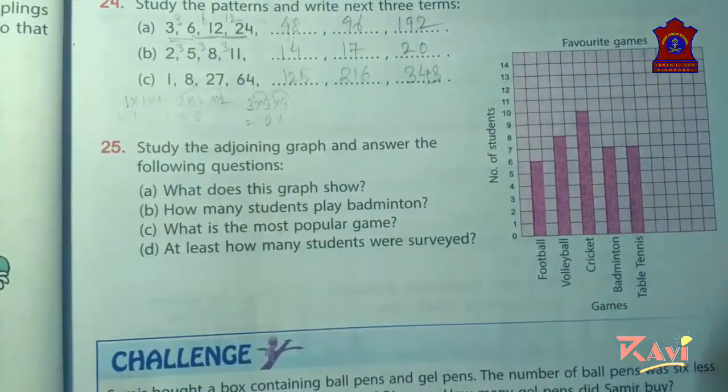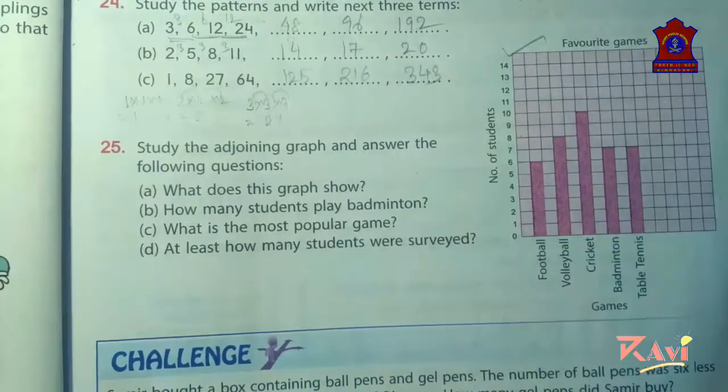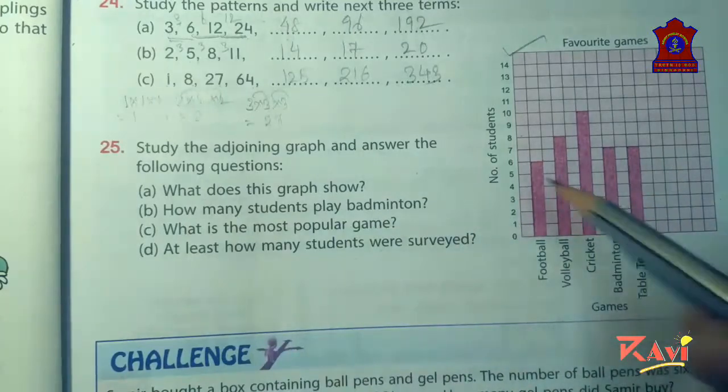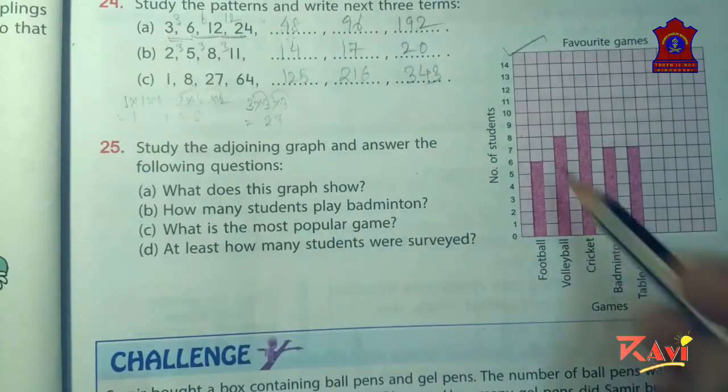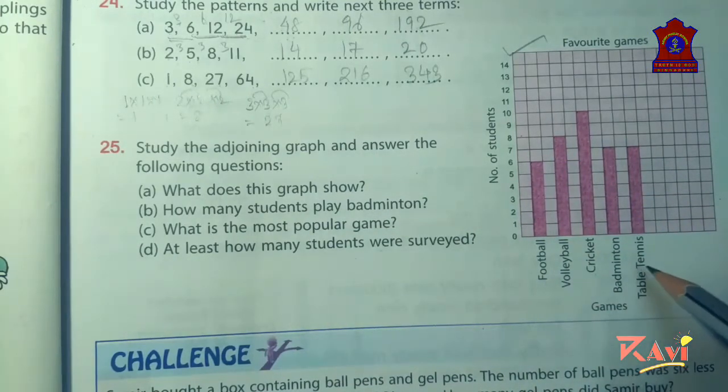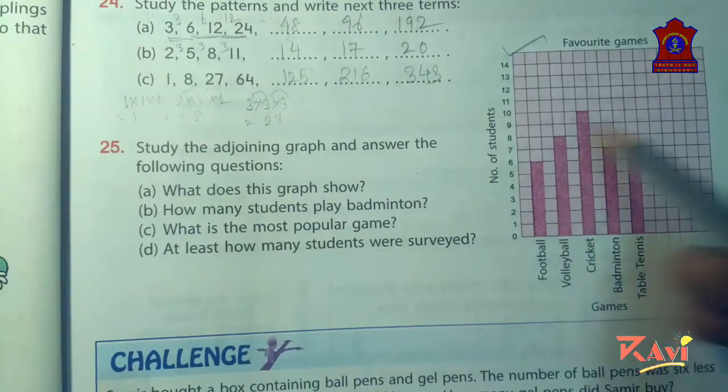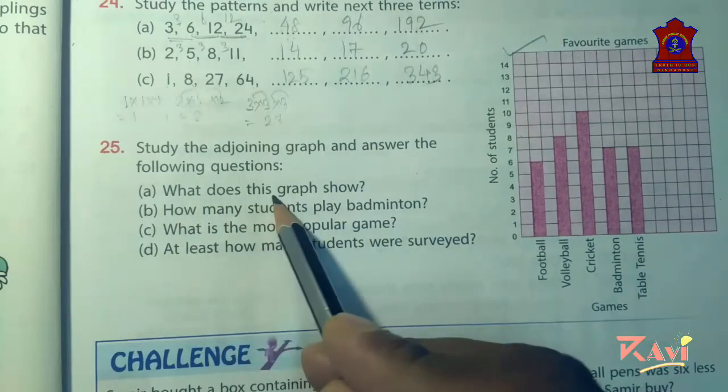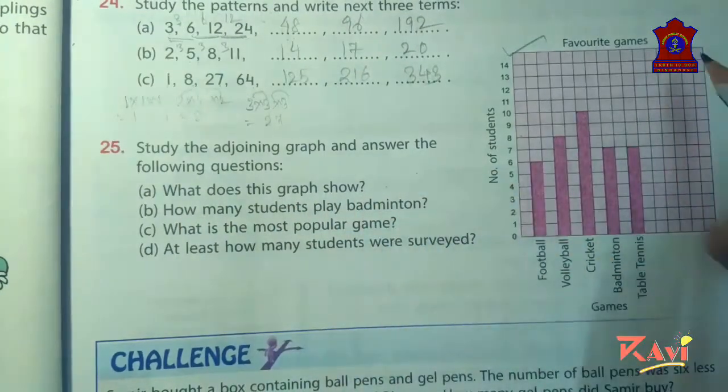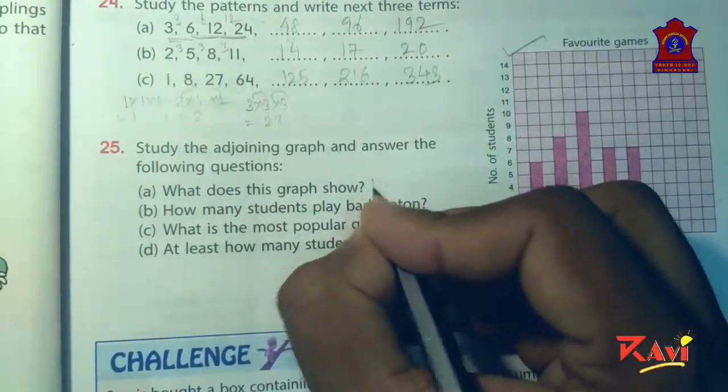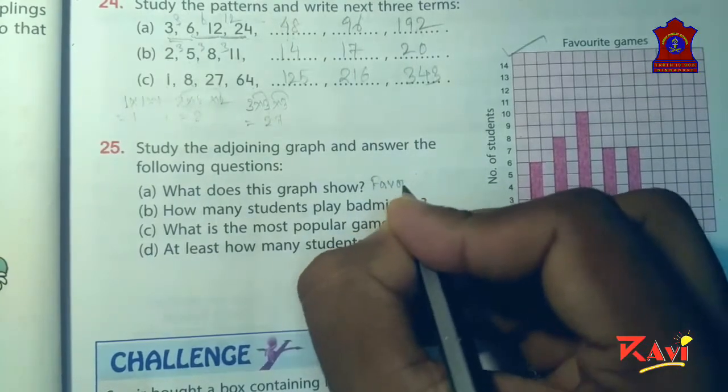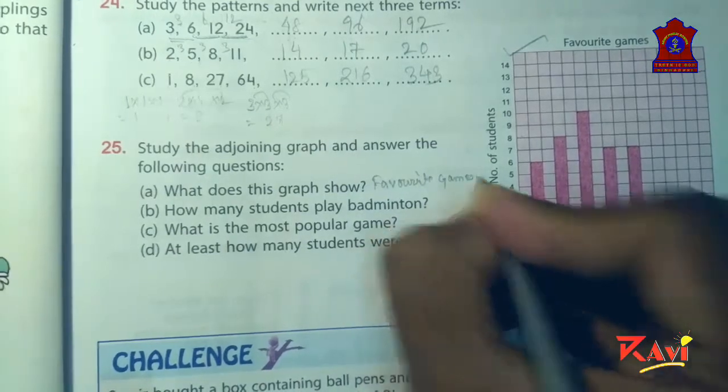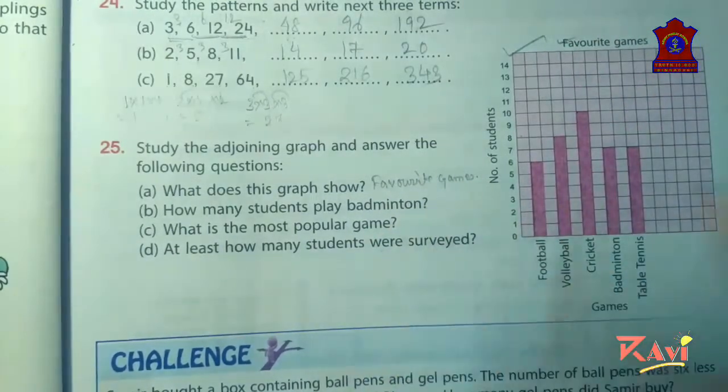Now let us move to question number 25. You have to read this graph and answer the following. This graph shows different games played by students - favorite games of the different students. So what does this graph show? This graph shows the favorite games played by students. So you can write the heading only: favorite games.